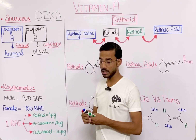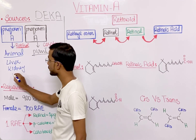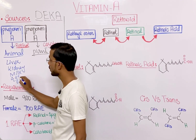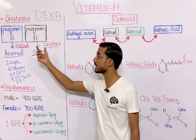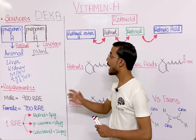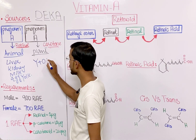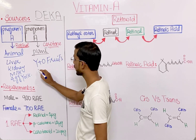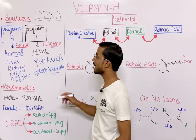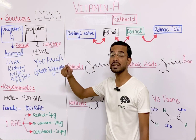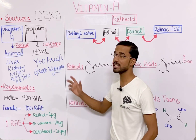The most important animal sources of preformed Vitamin A include liver, kidney, milk, egg yolk, cream, and butter — all containing retinol, the active form. From plants, the most important sources are yellow and orange fruits and greenish vegetables, which provide carotene. Carotene is further converted into retinol in the body.